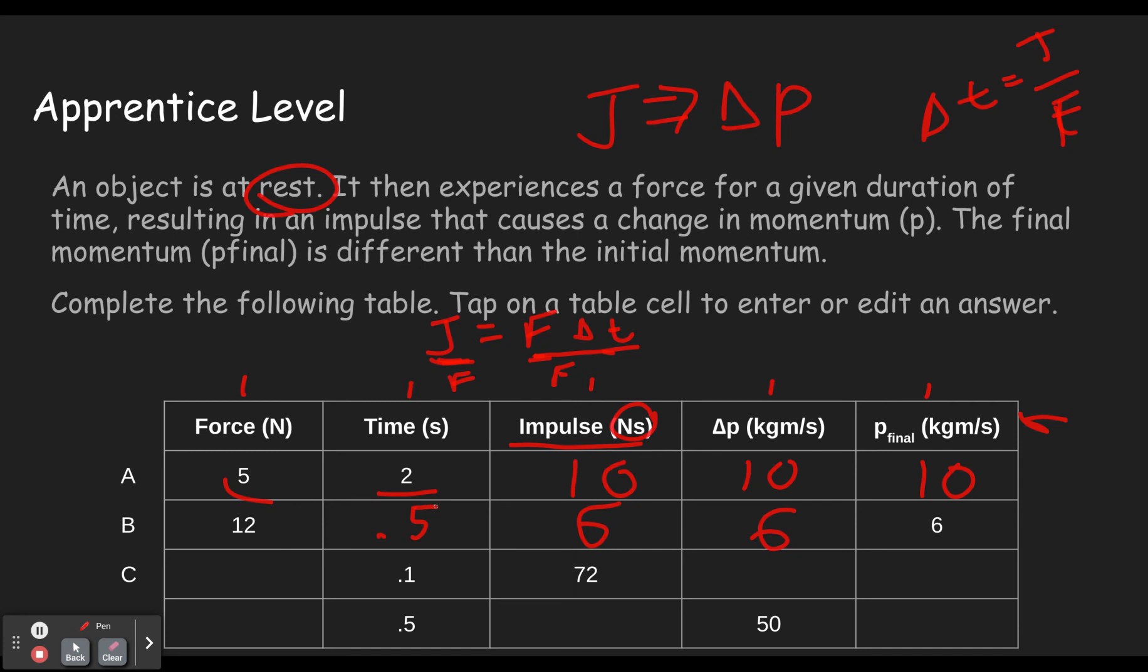Okay, so then we have an impulse of 72, a time of 0.1. Well, same thing here. If we divide both sides by delta T, we get force equals impulse divided by delta T.